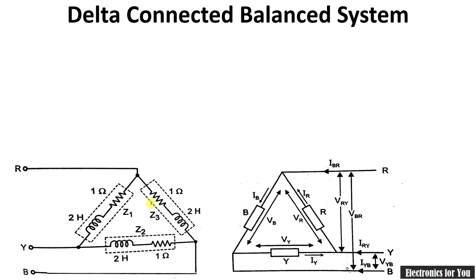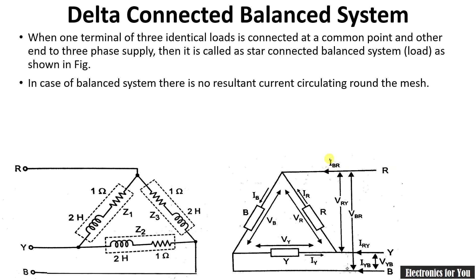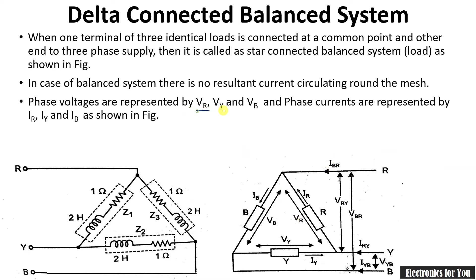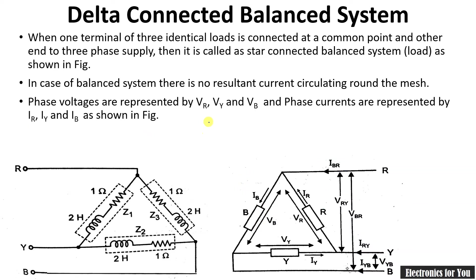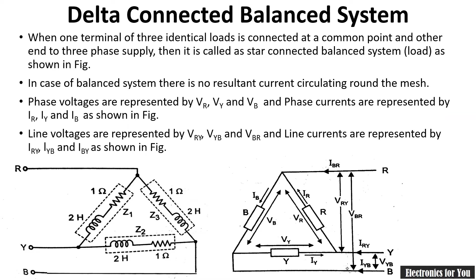This diagram shows a balanced delta connection with 1-ohm resistance and 2-henry inductance in each branch, so Z1 equals Z2 equals Z3, making it a balanced system. The phase voltages are represented by VR, VY, and VB, and the phase currents are represented by IR, IY, and IB. The diagram clearly shows phase voltages, line voltages, phase currents, and line currents respectively, and we will use this diagram for further interpretation.